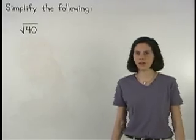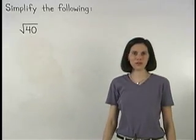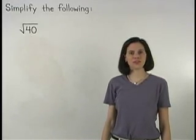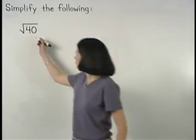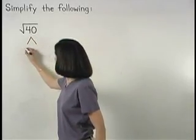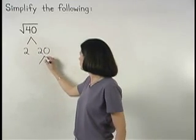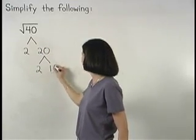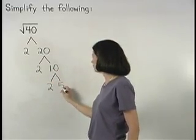To simplify the square root of 40, notice that 40 is not a perfect square. So let's start by setting up a factor tree. 40 factors as 2 times 20, 20 factors as 2 times 10, and 10 factors as 2 times 5.